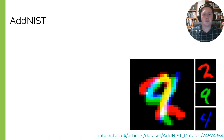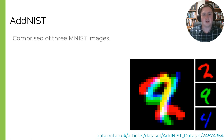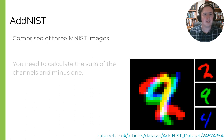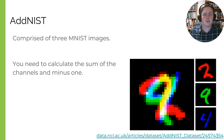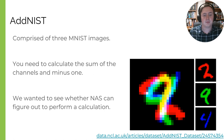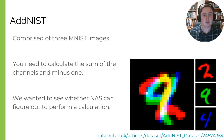Moving on to the datasets themselves, we'll start with ADNAS. ADNAS is comprised of three MNIST images in three color channels. Instead of just normal classification, there is a formula which is the sum of the three channels minus one, which the algorithm needs to figure out. So it's not just simple classification — it needs to determine that a calculation must be performed. We want to see whether machine learning can identify that a calculation is needed rather than just pure classification.